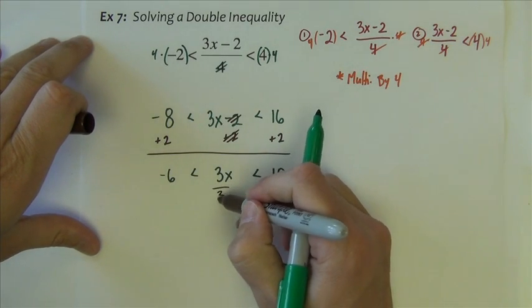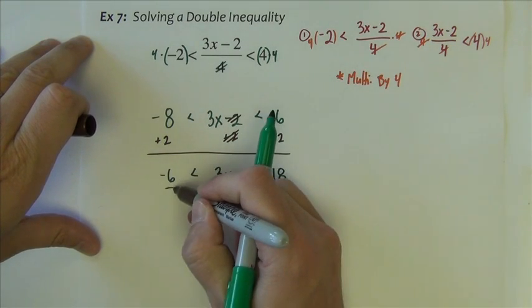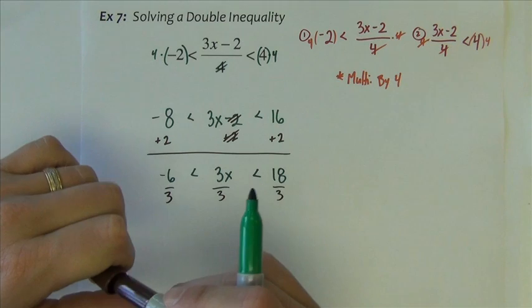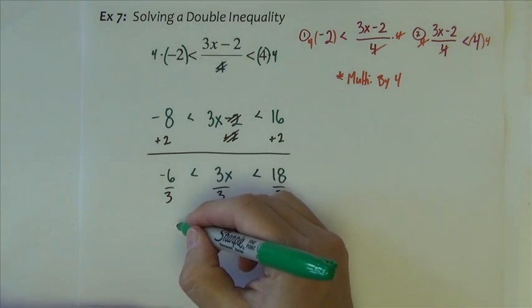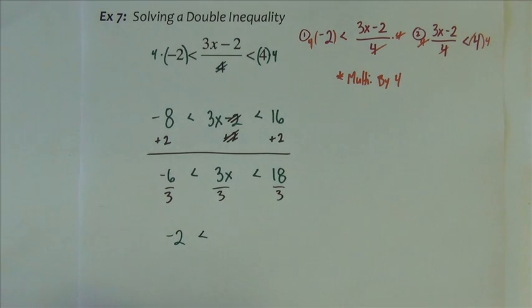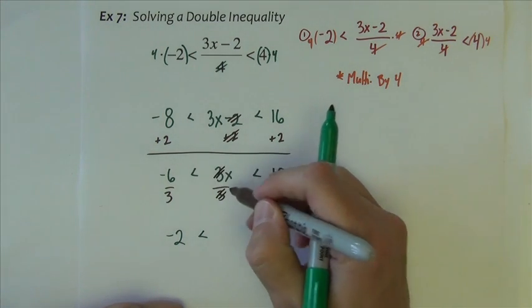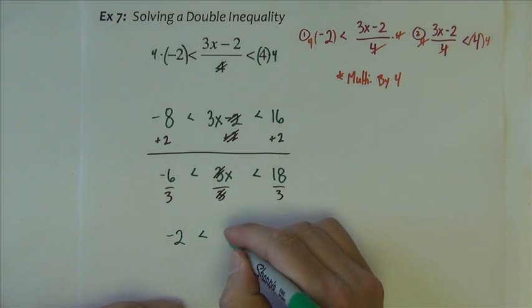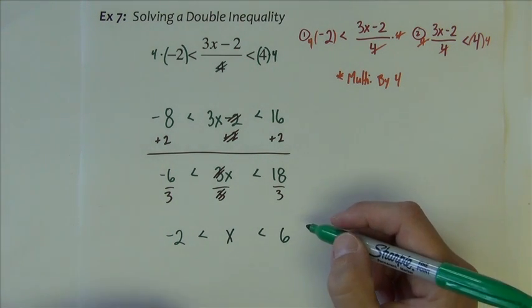Now we would of course divide by 3 to solve, but we have to do it to both problems. So we get both ends divided by 3. We get negative 2 is less than, 3s cancel, so x is less than 6.